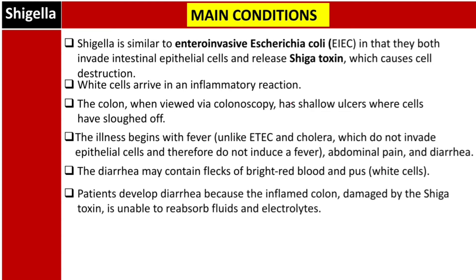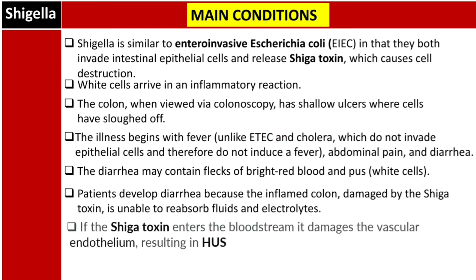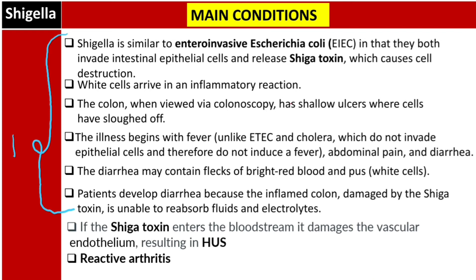Patients develop diarrhea because the inflamed colon, damaged by the Shiga toxin, is unable to reabsorb fluids and electrolytes. If Shiga toxin enters the bloodstream, it damages the vascular endothelium, resulting in hemolytic uremic syndrome (HUS). Another important associated condition is reactive arthritis. In summary, the three main conditions caused by Shigella are: number one, dysentery; number two, hemolytic uremic syndrome (when Shiga toxin enters the bloodstream); and number three, reactive arthritis.